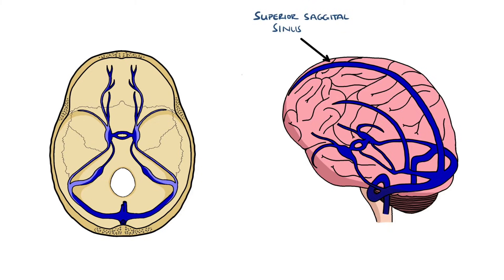We'll take a quick look at the anatomy. First, we have the superior sagittal sinus, which runs from the frontal lobe all the way back to the internal occipital protuberance.